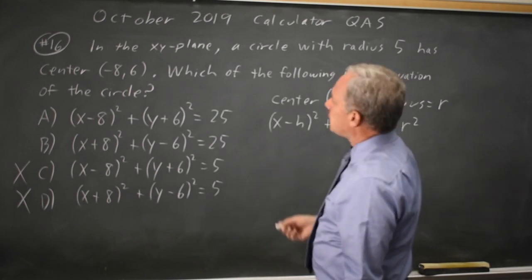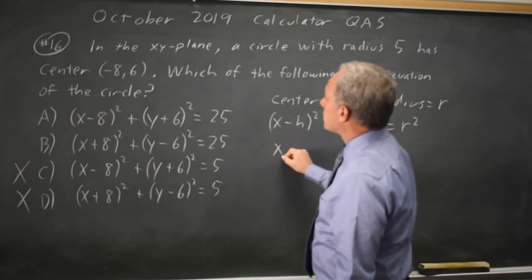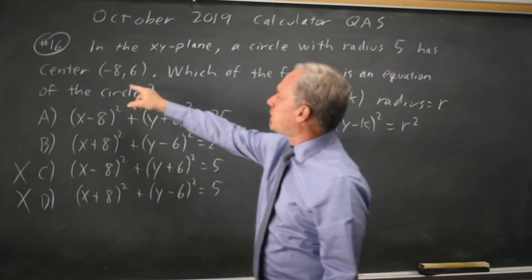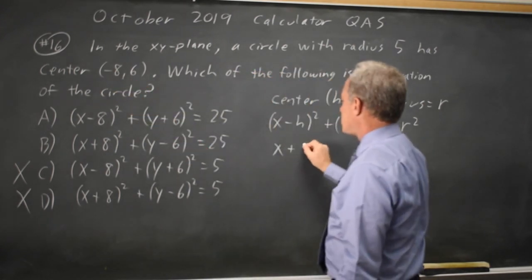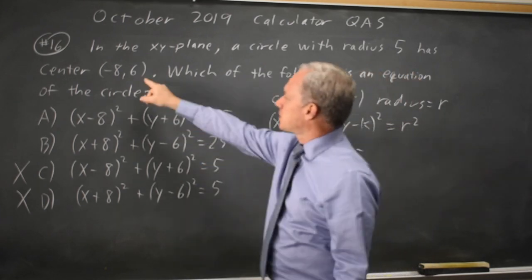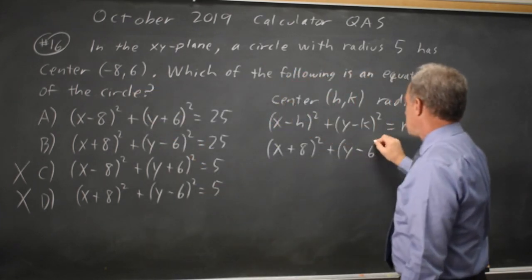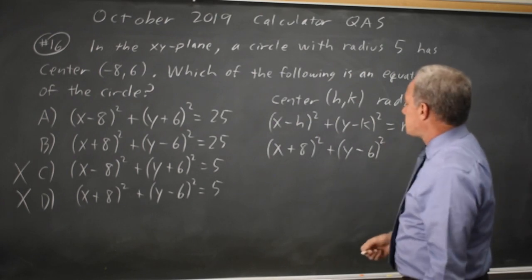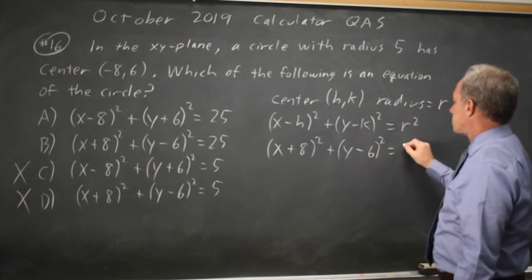And then our center is x minus h, so x minus negative 8 is x plus 8. And y minus k is y minus 6. So (x+8)² + (y-6)² = r², which is 25.